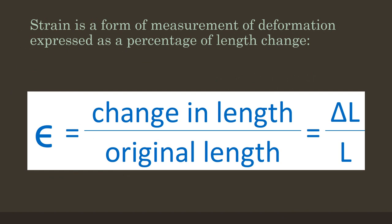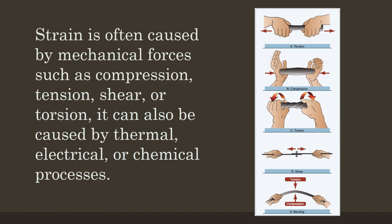Strain is denoted by the Greek letter epsilon and the formula is change in length divided by the original length. Strain is often caused by mechanical forces such as compression, tension, shear, or torsion. It can also be caused by thermal, electrical, or chemical processes.